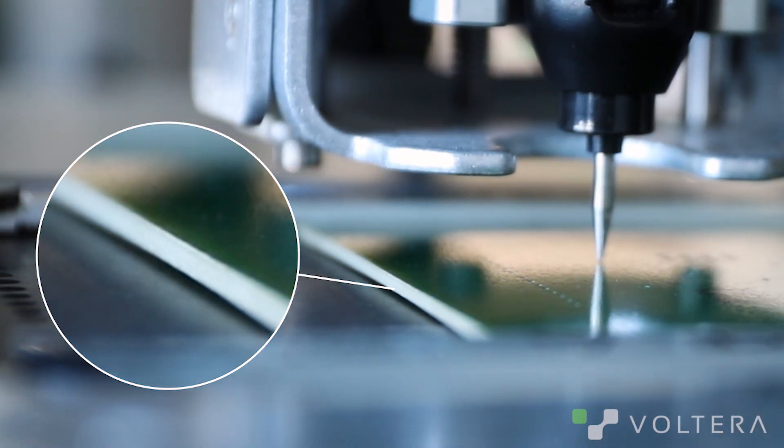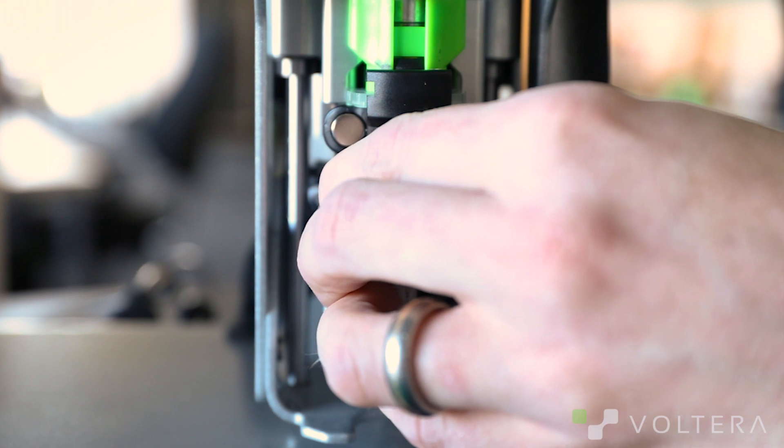Also, make sure you have the dispenser properly mounted on the carriage. Give it a wiggle and make sure it doesn't move. If the dispenser isn't properly clipped in, it will mess with the print height.